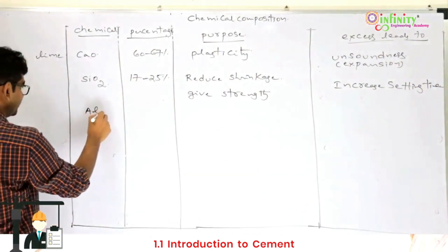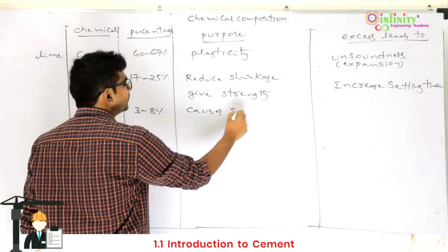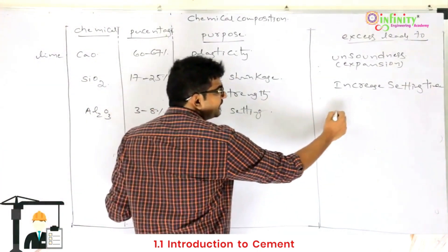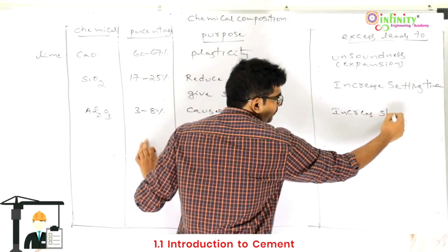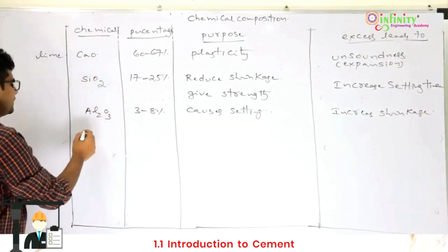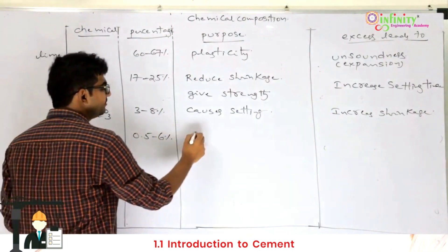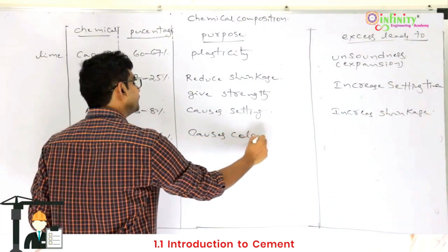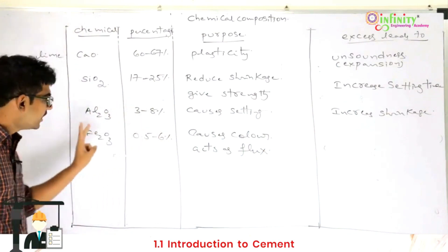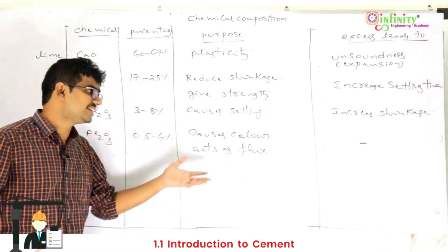Next is alumina, which is 3 to 8 percent. Alumina causes the setting of the cement. If alumina is excess, it will increase the shrinkage. Shrinkage means reduction in volume. Next is iron oxide, which is 0.5 to 6 percent. Iron oxide causes the color of the cement and acts as a flux in the rotary kiln. If iron oxide is excess, basically nothing major happens to the cement.